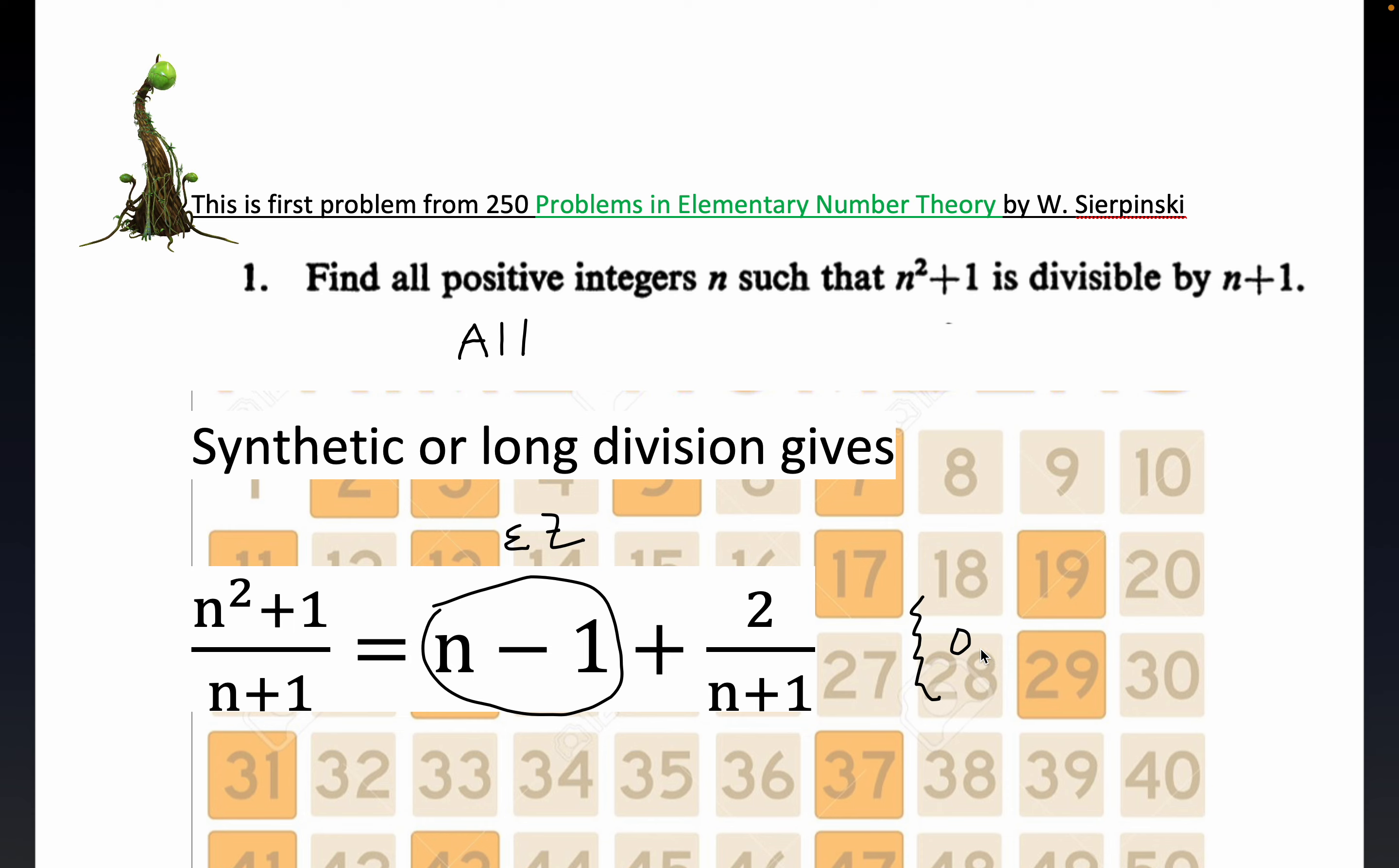If N is 0, okay, if N is 0, this part's an integer, right? Also, if N is equal to 1, this piece right here is an integer. 2 over 2 is certainly 1.